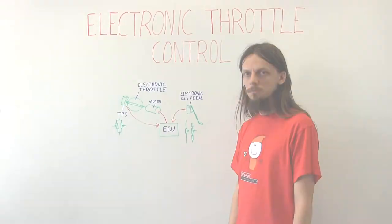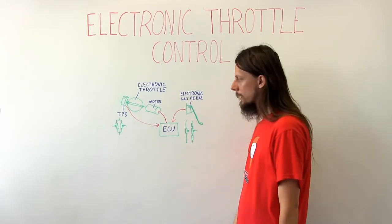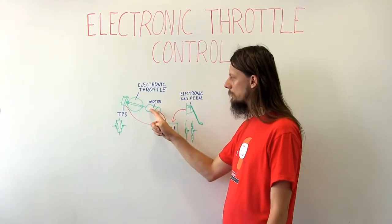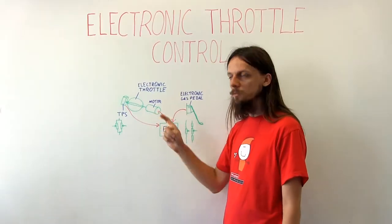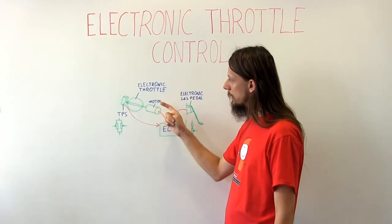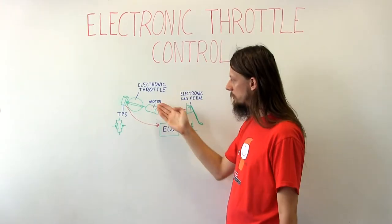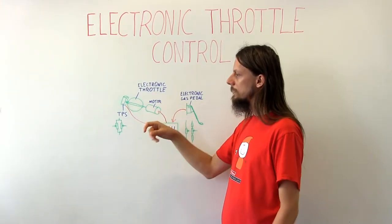With electronic throttle it looks a little bit different. Instead of that mechanical link, now we'll have the actuator in form of electric motor here that will control the throttle position. This motor will basically move it instead of the linkage.